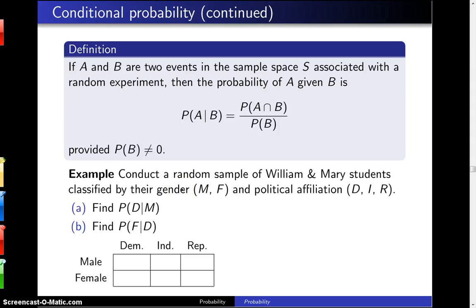Here is the definition of conditional probability. If A and B are two events in the sample space S associated with a random experiment, then the probability of A given B is P(A|B) equals the probability of A intersect B divided by the probability of B.